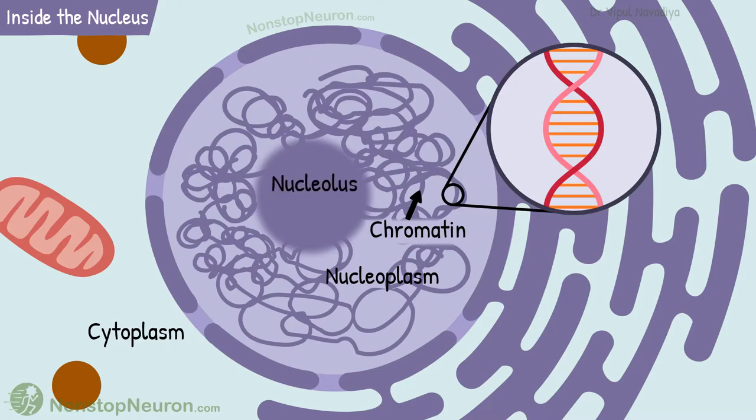Now the nucleolus. It is an accumulation of RNA and proteins of the types found in ribosomes. There can be one or more such nucleoli in the nucleus.